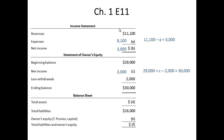Moving down to the balance sheet, our three remaining letters are D, E, and F. The balance sheet equation is assets equals liabilities plus owner's equity. The ending balance from the statement of owner's equity carries down to the balance sheet, so E equals $30,000. Taking $16,000 of total liabilities plus $30,000 of owner's equity gives us total liabilities and owner's equity of $46,000.